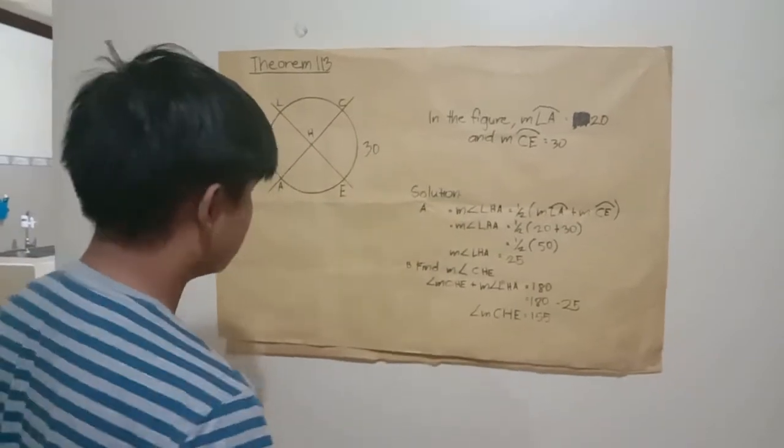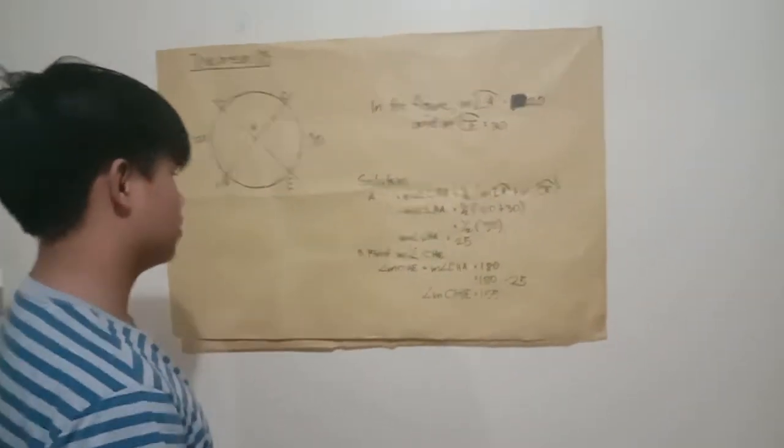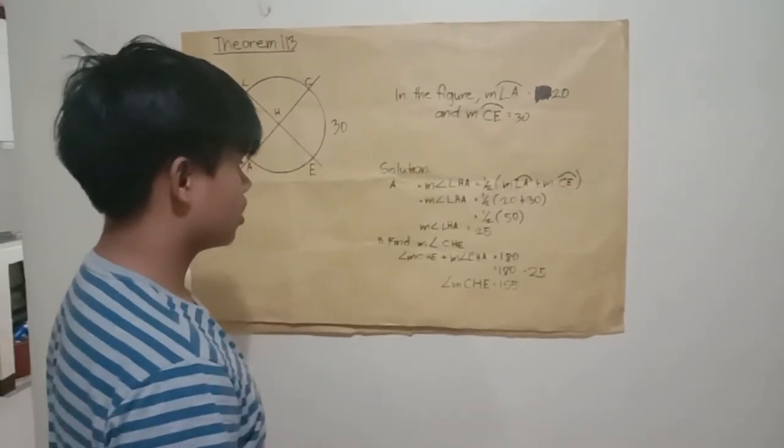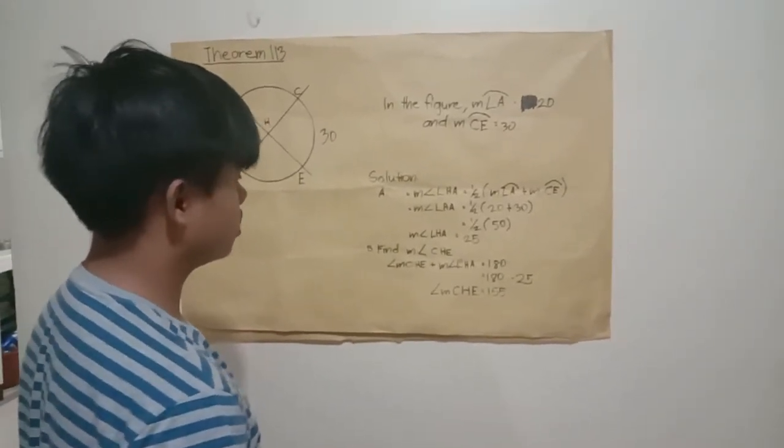The solution, letter A: measure angle LHA equals one-half times measure arc LA plus measure arc CE.